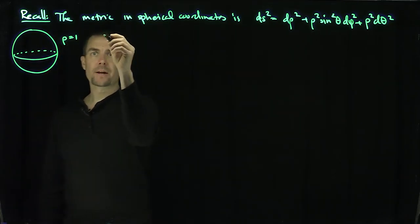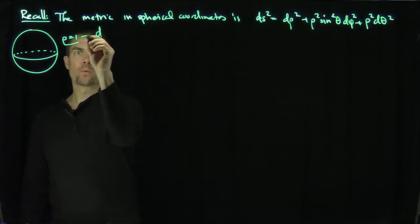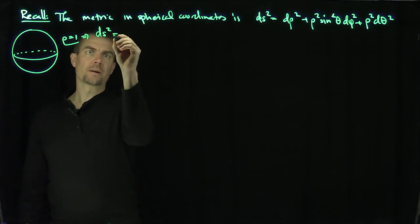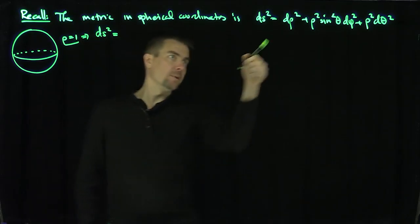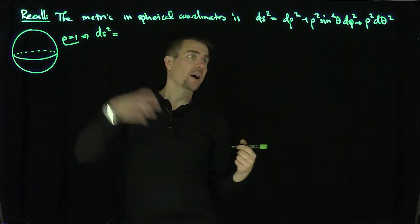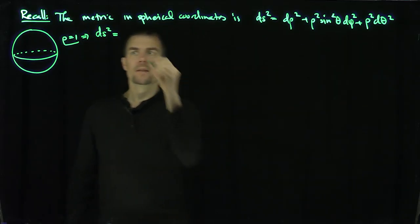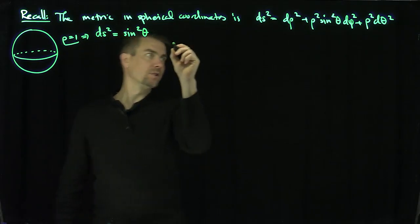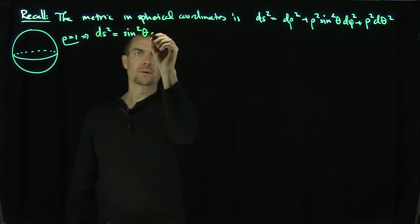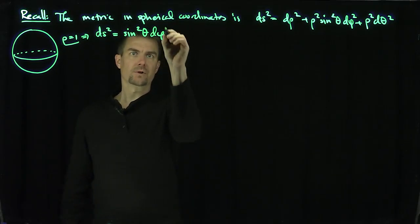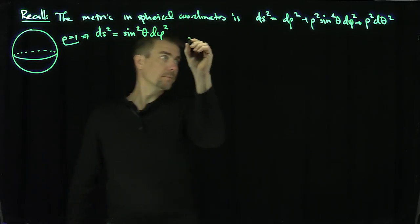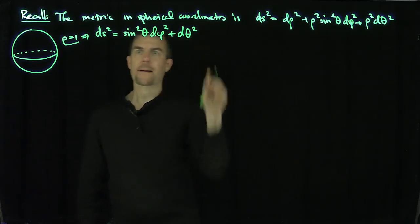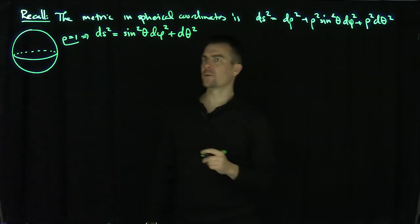What does our metric turn into when ρ is equal to 1? The dρ² term drops because ρ is constant, and our surface metric becomes ds² = sin²θ dφ² + dθ². That's my surface metric.